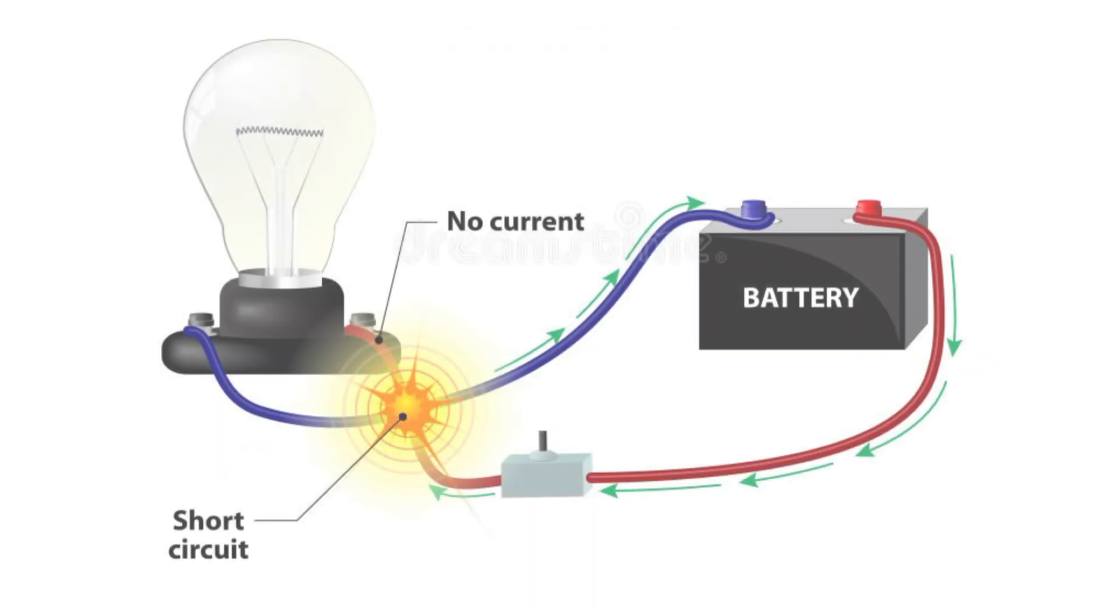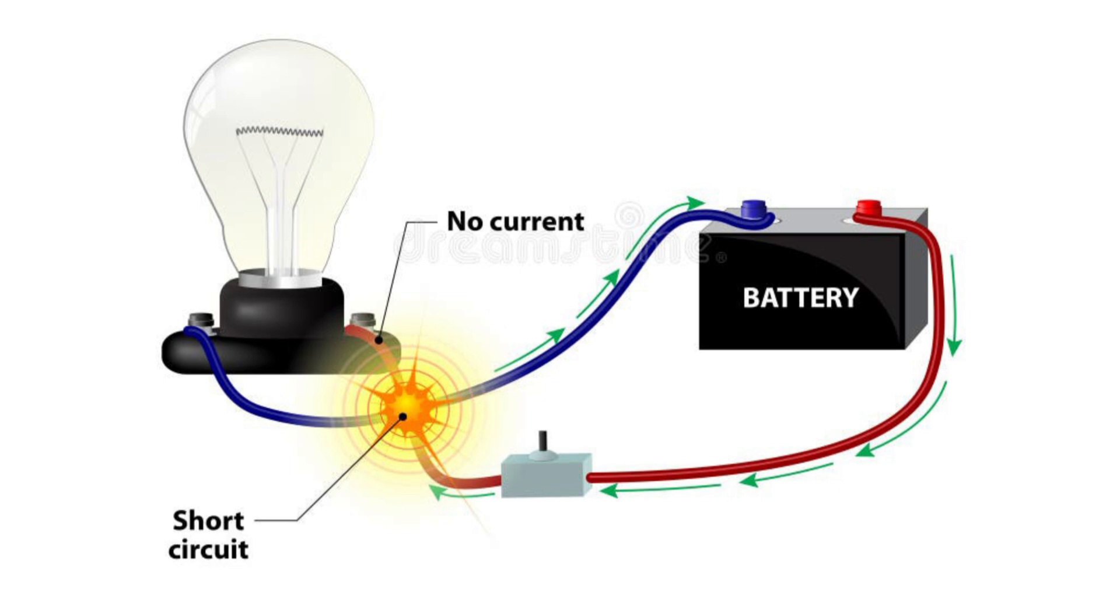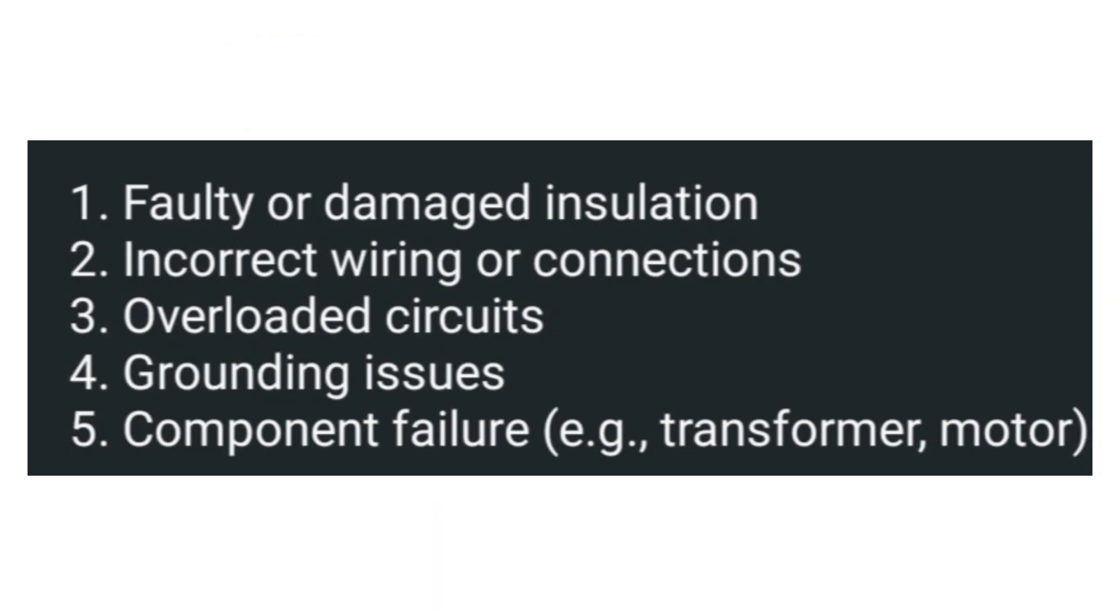Due to this, the devices or loads which are connected to the circuit may be damaged. The short circuit can occur due to faulty or damaged insulation, incorrect wiring or connections, overloaded circuits, and sometimes component failure.